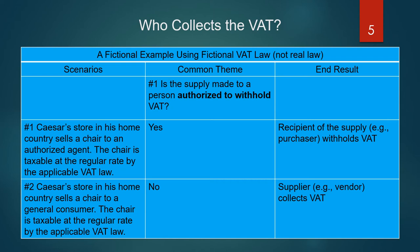Scenario number one: Caesar's store in his home country sells a chair to an authorized agent. The chair is taxable at the regular rate by the applicable VAT law. Does common theme number one apply? Is the supply made to a person authorized to withhold VAT? The answer is yes. In this case, the recipient of the supply — the purchaser — withholds VAT and will subsequently remit the VAT to the VAT authorities.